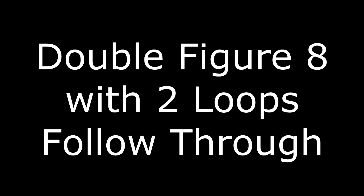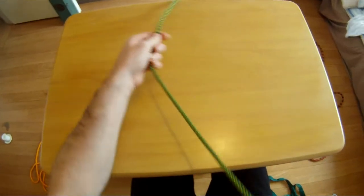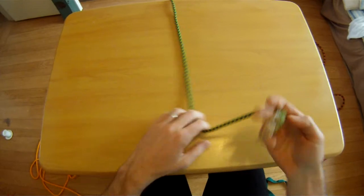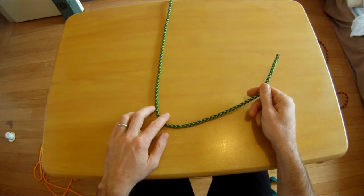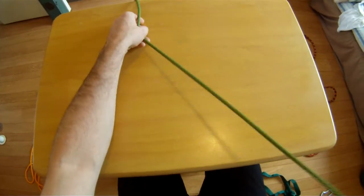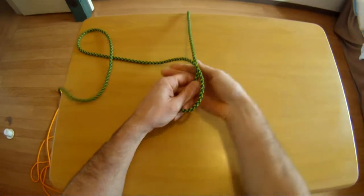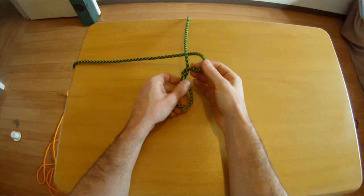Now the same knot, the double figure eight with two loops, but tied using the follow-through method. This is useful for tying around trees or equalizing anchor points. So, tie a single figure eight with a very long tail.